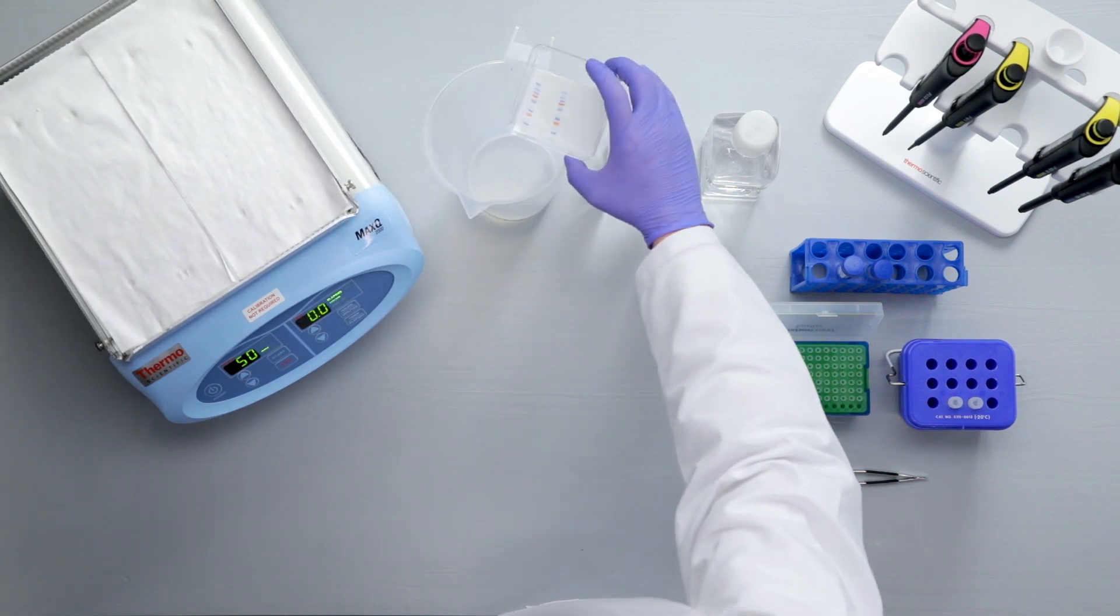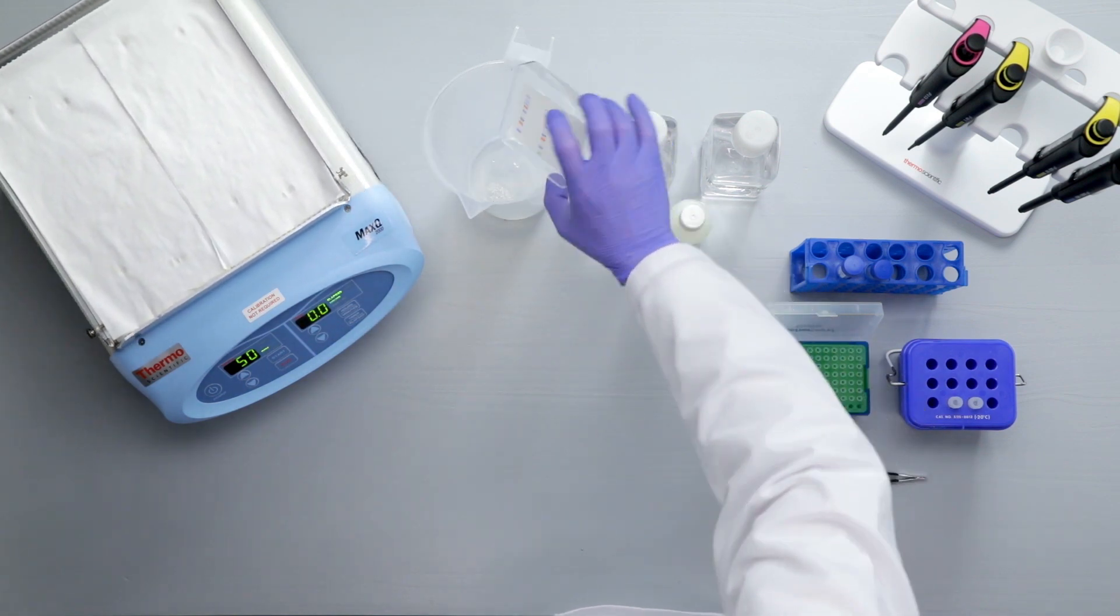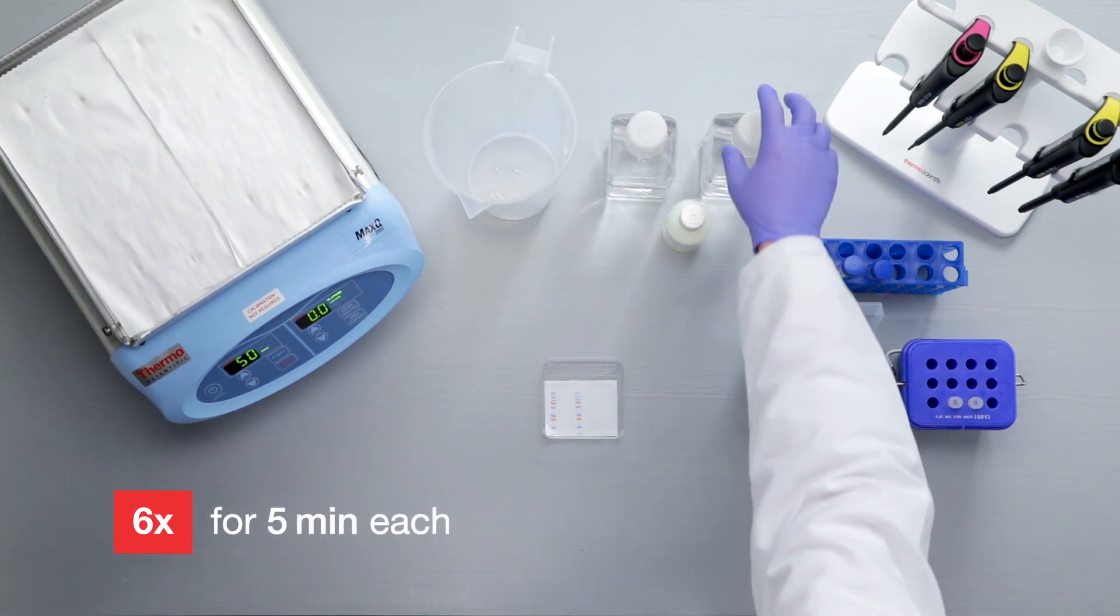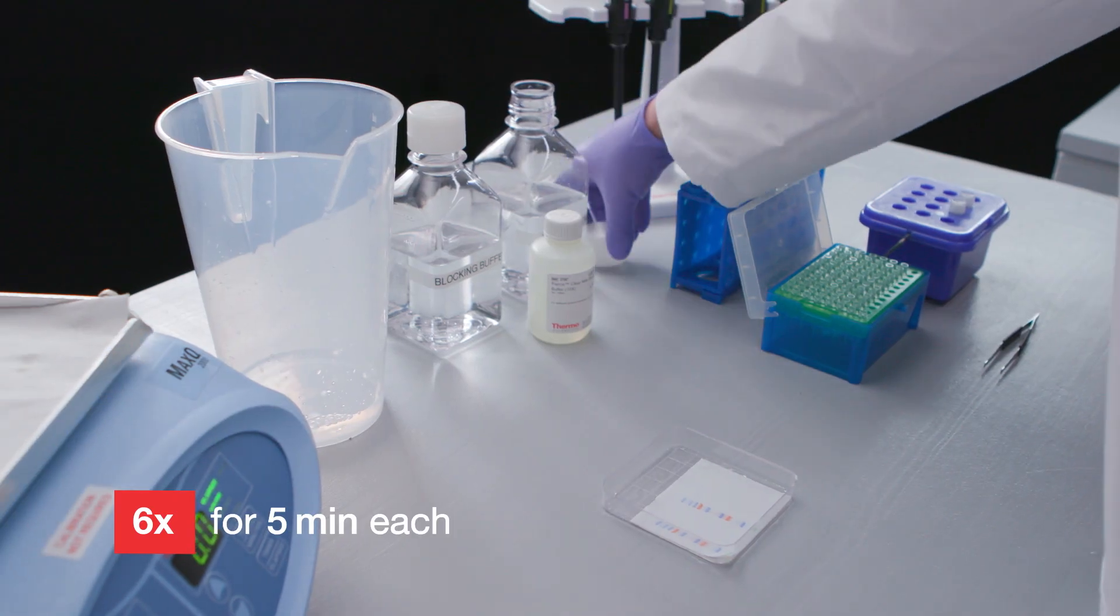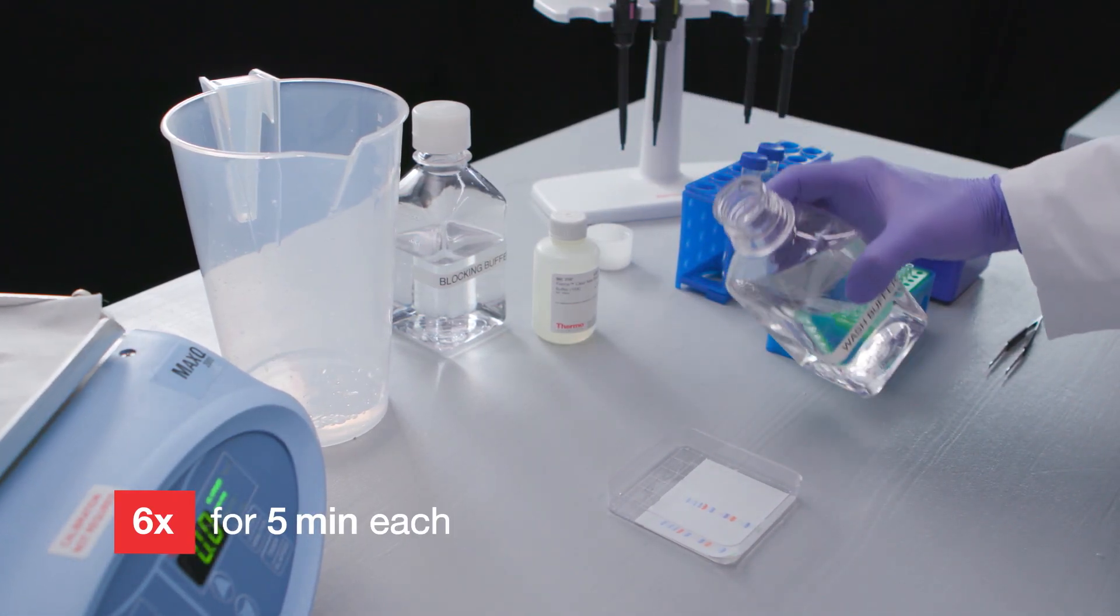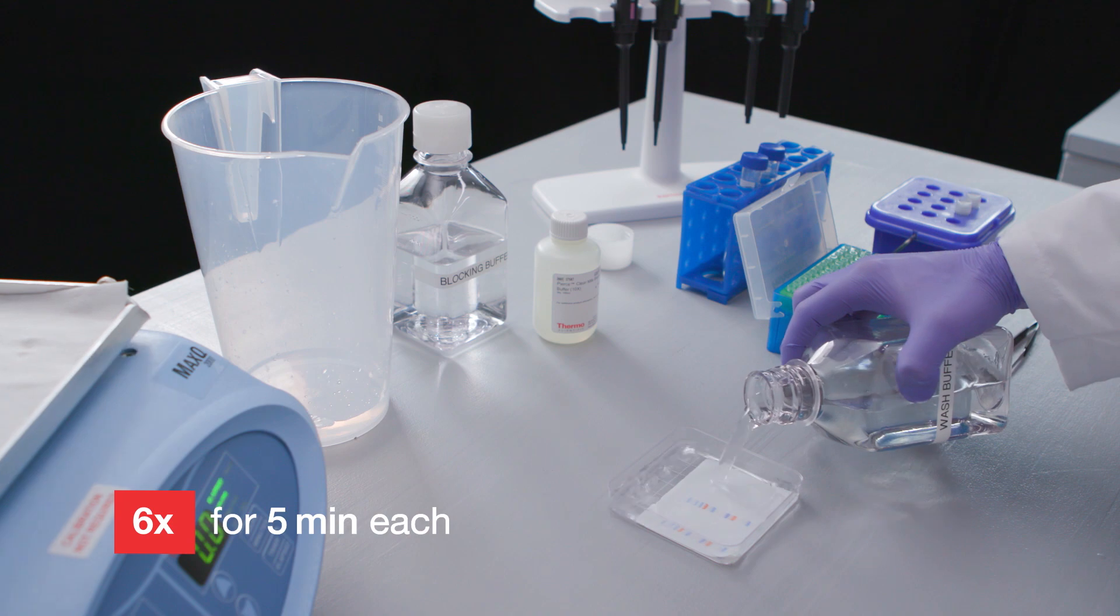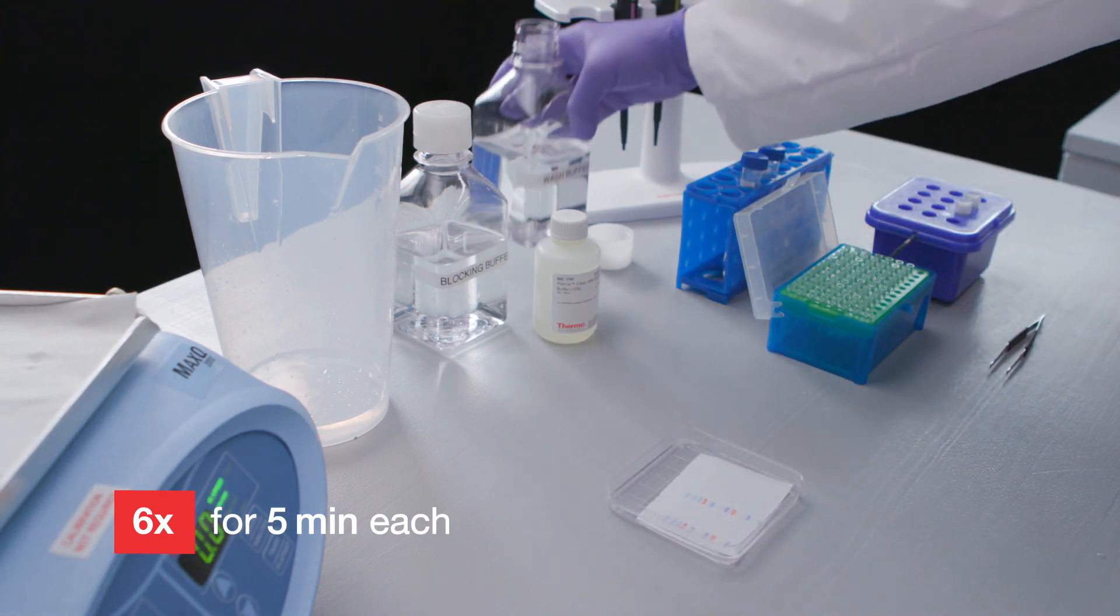Remove any unbound secondary antibody by performing a series of washes. Wash the membrane 6 times for 5 minutes each in wash buffer with gentle agitation. Washing at this step is important to help limit background signal.